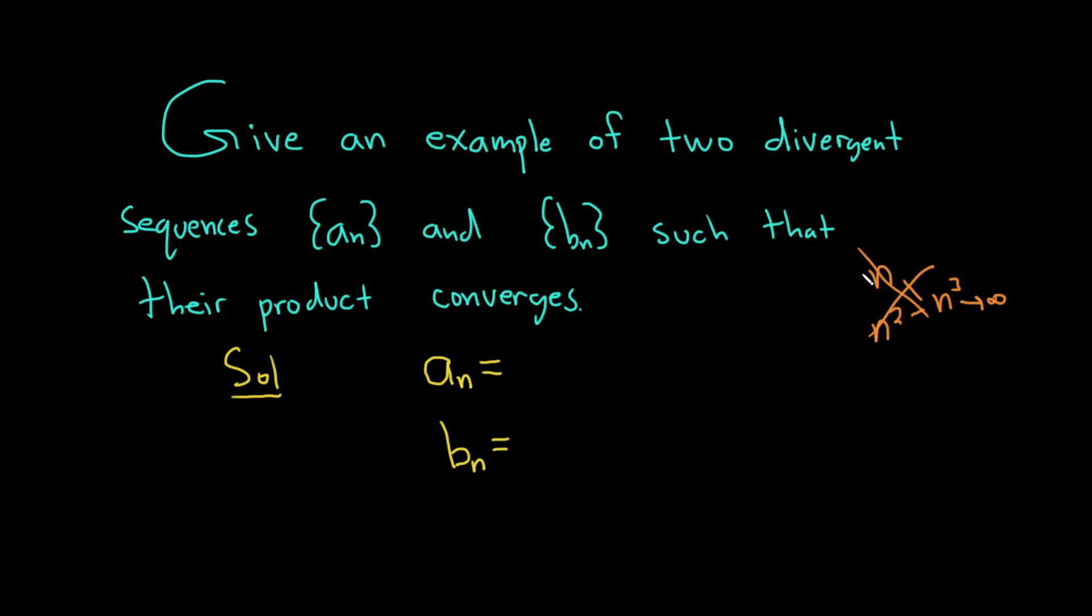Another reason that sequences diverge is because they oscillate. A good example of that would be negative 1 to the n. In fact, if you let them both be negative 1 to the n, these are both the same sequence, and they both diverge.